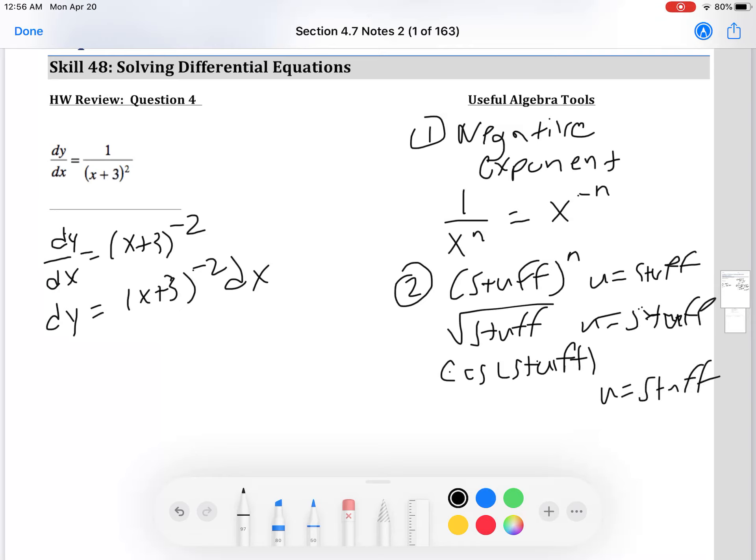or if it's in the exponent, so like I have e to the stuff, or natural log of stuff, notice that I'm saying of. This means that there's probably some sort of u substitution going on, and the reason why is because we have a function inside of a function.